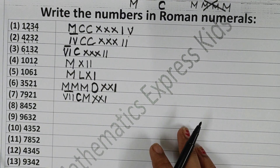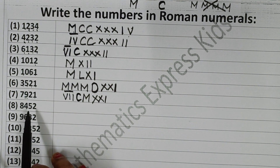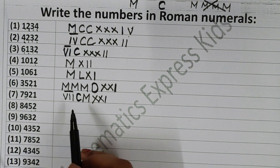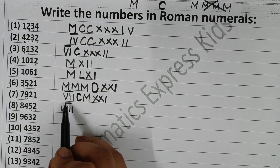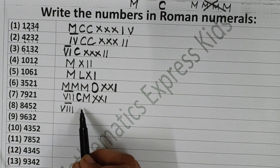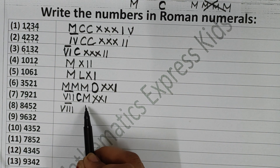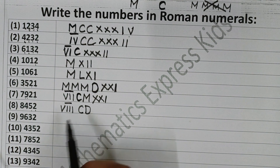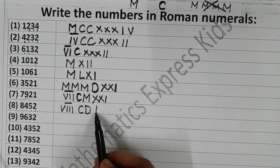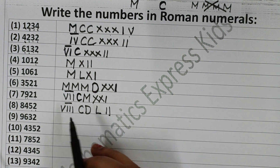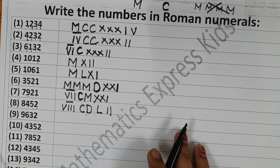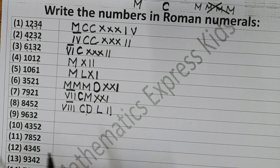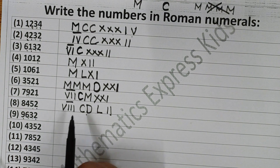Now the next one is 8452. How do you write 8000? Write 8 — that is V plus I plus I plus I, so VIII — and give a bar over it. For 400: write 500 and subtract 100 from it — CD — that is 400. Then 50 is L, and 2 is II. So 8452 is VIII-bar CDLII. Clear?